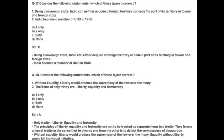Consider the following statements. Which of these are incorrect? One: Being a sovereign state, India can neither acquire a foreign territory nor cede a part of its territory in favor of a foreign state. Two: India became a member of UNO in 1950. Answer is C. Being a sovereign state, India can either acquire a foreign territory or cede a part of its territory. India became a member of UNO in 1945.